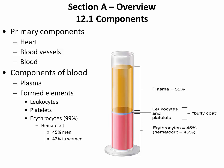If we take blood and place it in a centrifuge and spin it at a relatively low velocity for 10 minutes, the formed elements pack down to the bottom of the tube and the plasma ends up on top. The erythrocytes end up on the bottom, and on top of them is a thin layer called the buffy coat, consisting of leukocytes and platelets. Erythrocytes make up 45% in men and 42% in women of total blood volume.